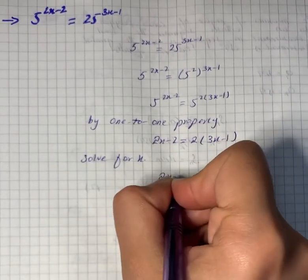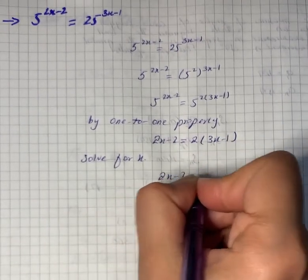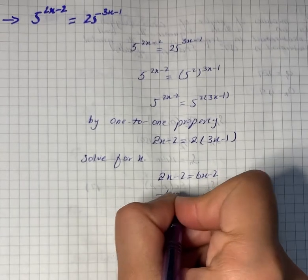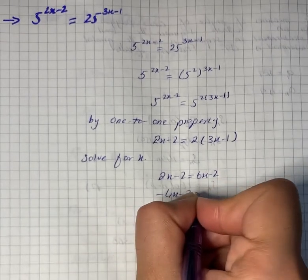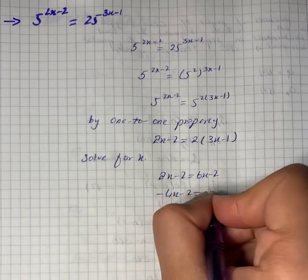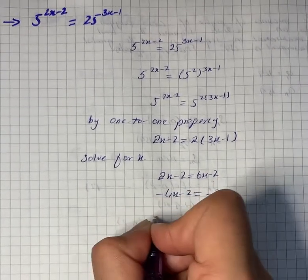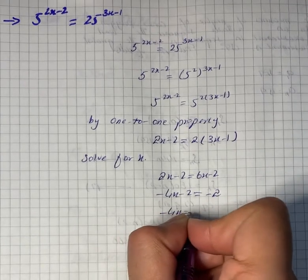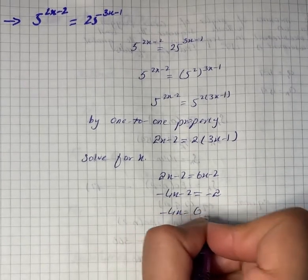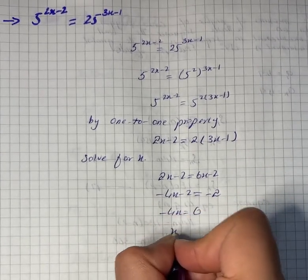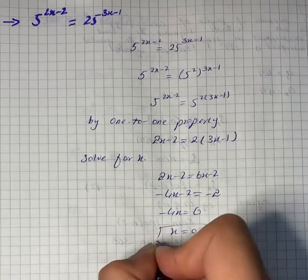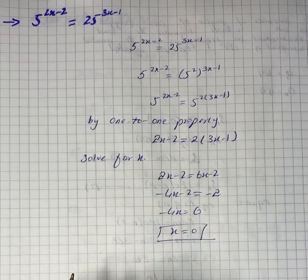So we have 2x minus 2 equals to 6x minus 2, which gives minus 4x minus 2 equals to minus 2. So minus 4x is equal to 0, and x is equal to 0. That is our solution for the given question.